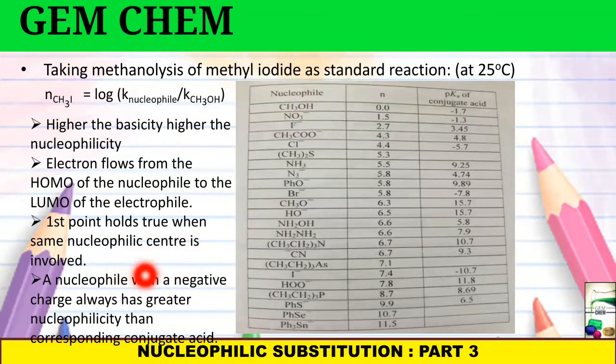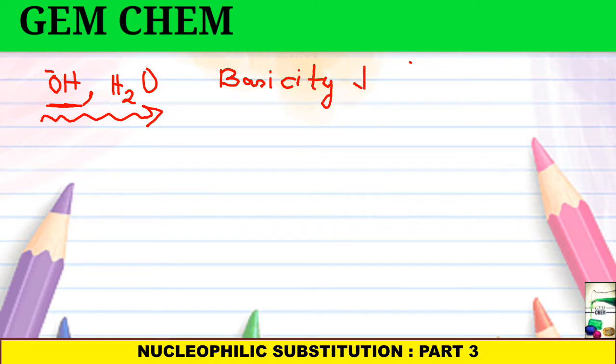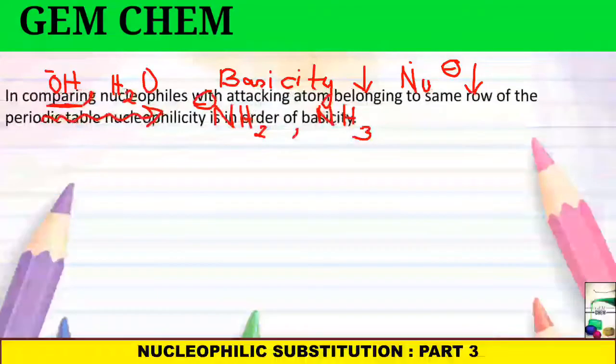Similarly, a nucleophile with a negative charge always has greater nucleophilicity than the corresponding conjugate acid. That is, if you consider here OH- and water. So here OH- is our nucleophile, whereas H2O is its conjugate acid. So as we go from OH-, that is, charged to neutral, our basicity is decreasing on going to the conjugate acid. So nucleophilicity will also decrease. Similar example is that NH2- and ammonia. Ammonia is less basic as well as less nucleophilic than NH2-.